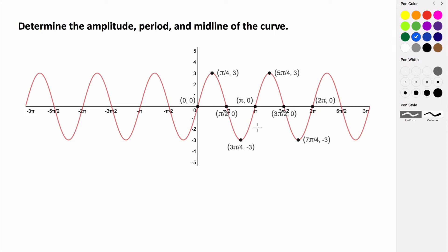This is a sine curve. We know that it's a sine curve because it starts at zero, then goes up to a maximum, back to a zero, minimum, zero, and so on. The period is the distance that it takes for our graph to complete one cycle, or basically how long before the pattern repeats.